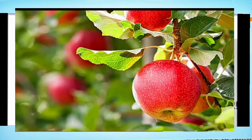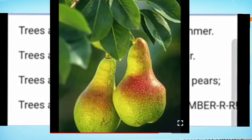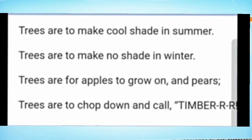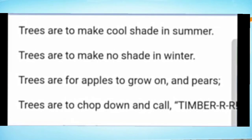Trees are for apples to grow on and pears — we get many different kinds of fruits from trees. Trees are to chop down and call timber. Timber means wood; we cut down trees to make wood, and from the wood we make furniture. So trees are used to make furniture.